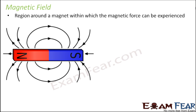Here is a simple example. If you keep a magnet in your study room and keep nails in your living room, do you think the nails will get attracted by the magnet? Of course not — because the nails are not present within the magnetic field of the magnet, not within the region up to which they can experience the magnetic force.